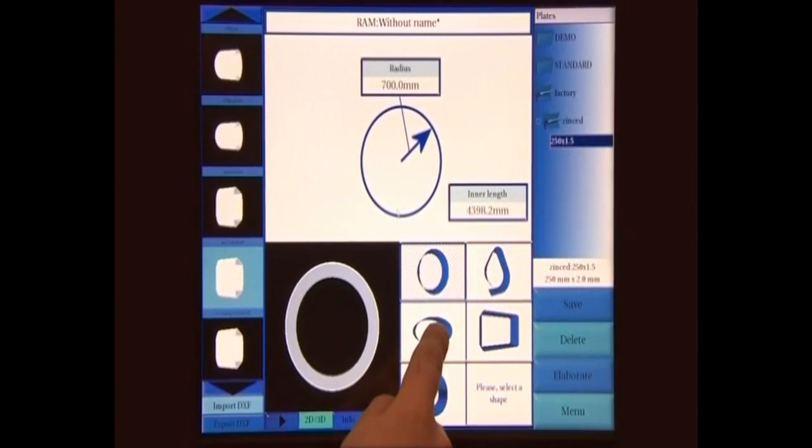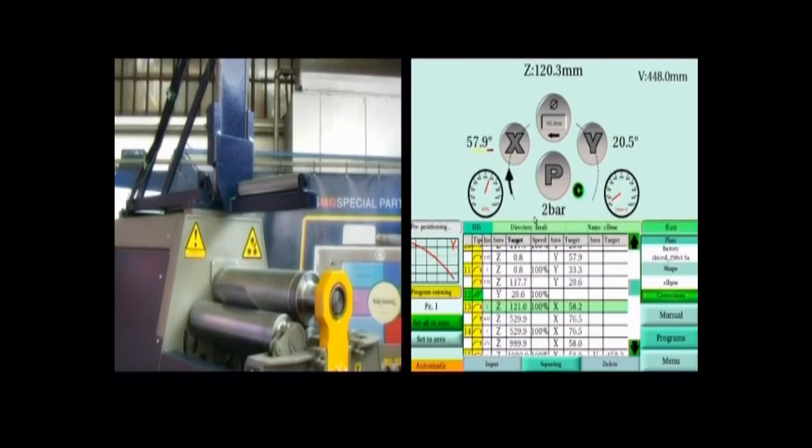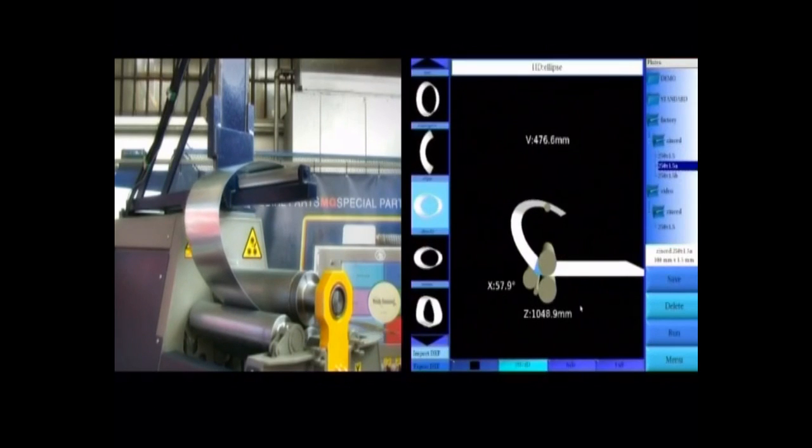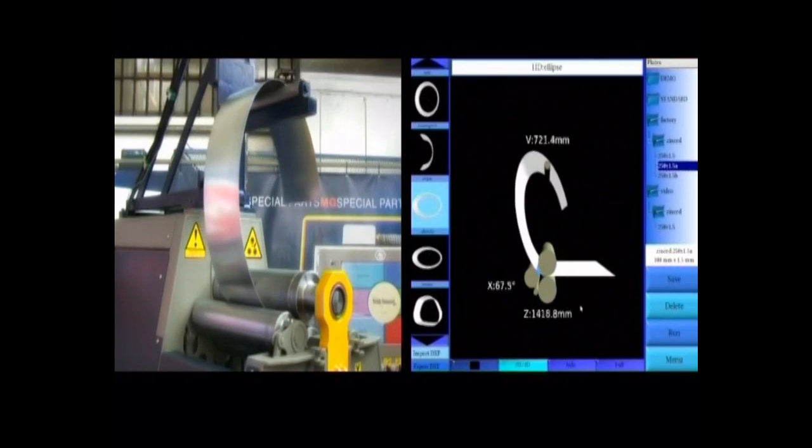Let's close our demo showing the bending of an elliptical shape. The program has been generated following the same steps adopted for the rectangular tank. Obviously if we use the same plate it's not necessary to repeat any test on it, but it's enough to select the previously saved plate and launch the elaboration with a new shape data.